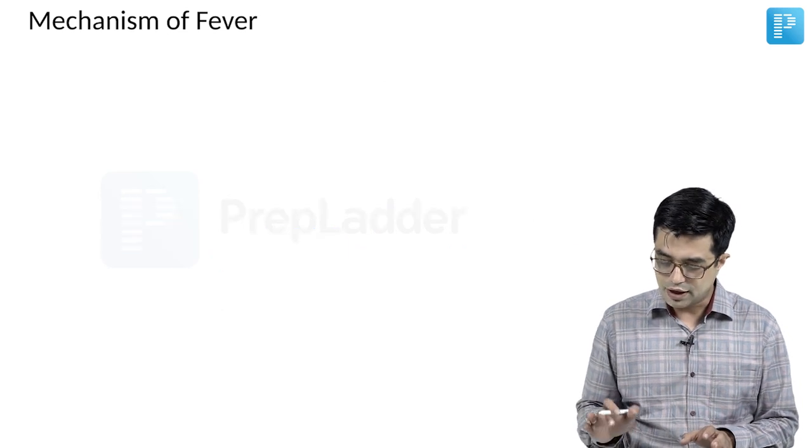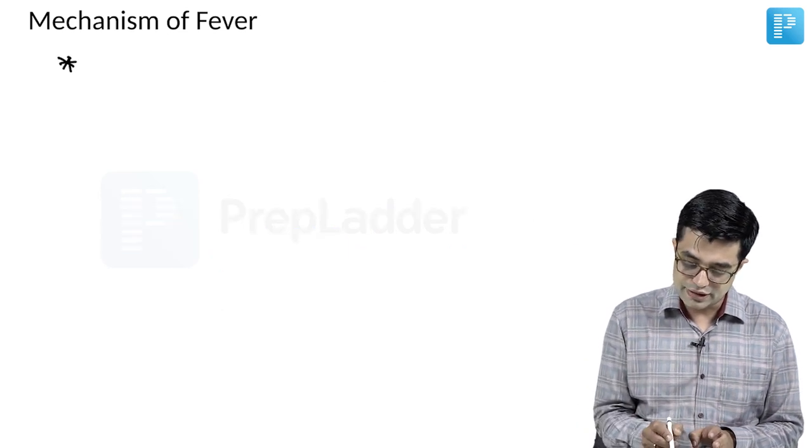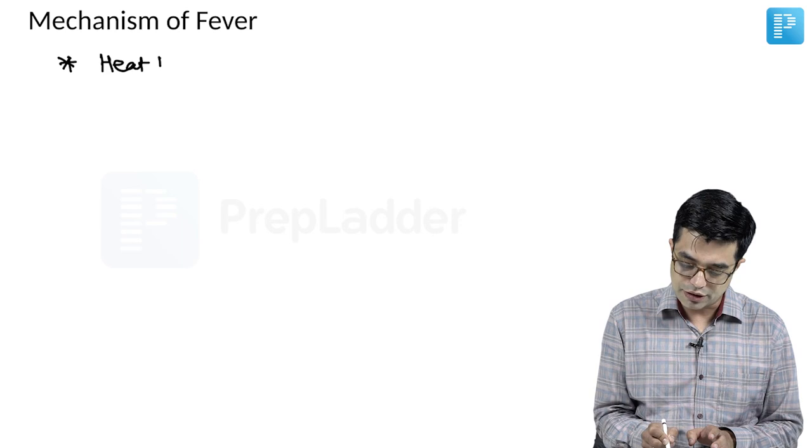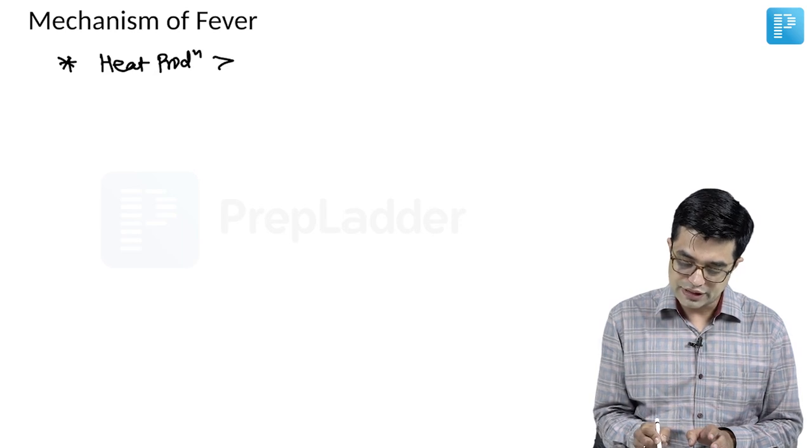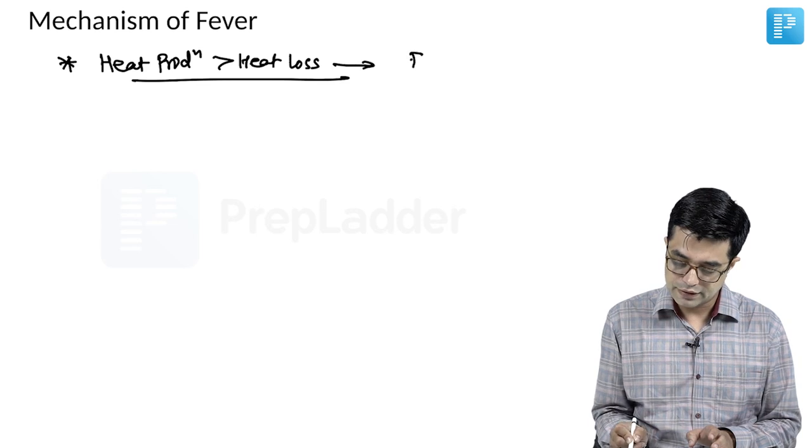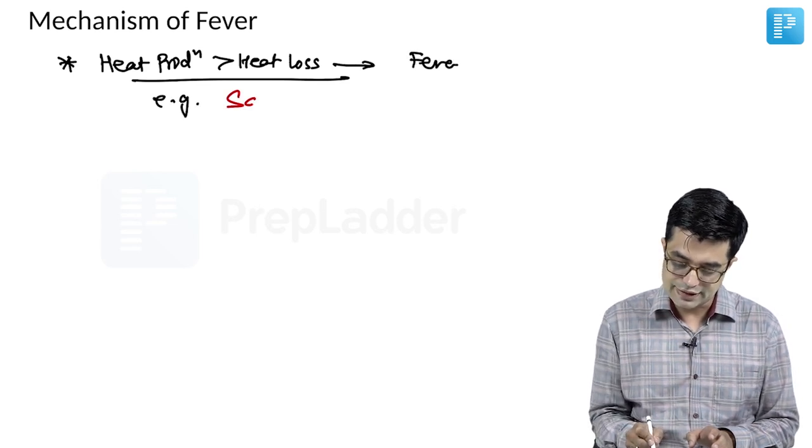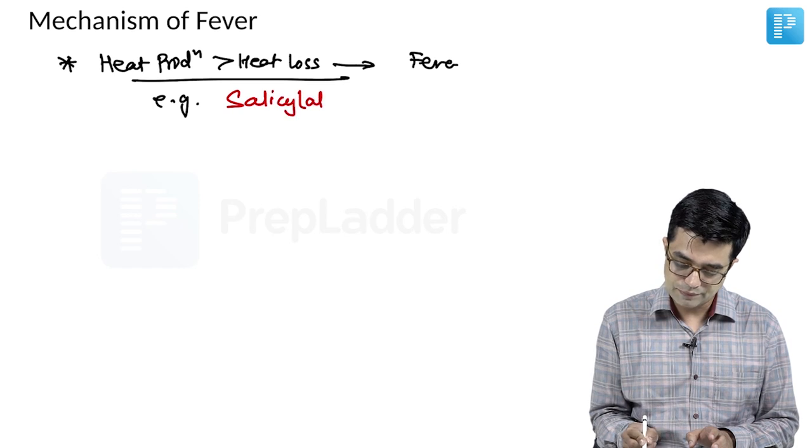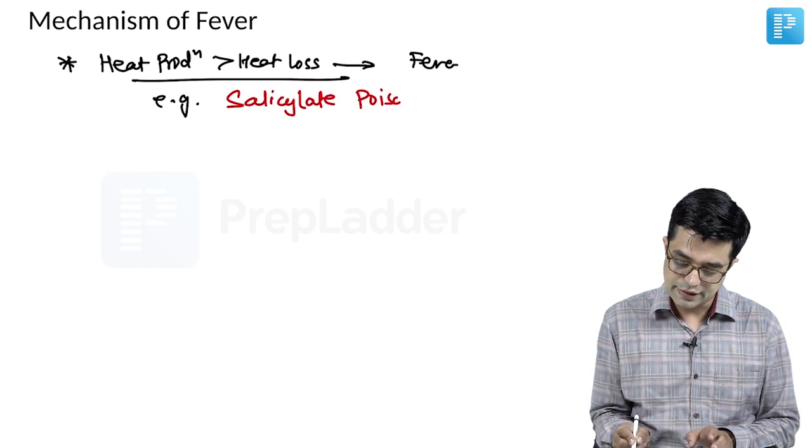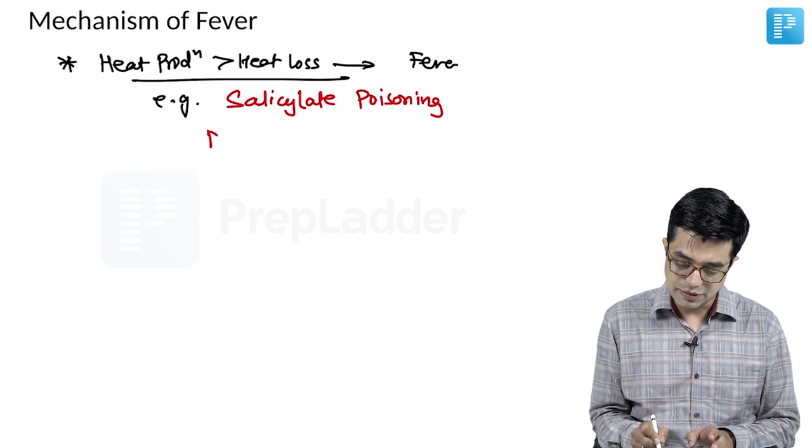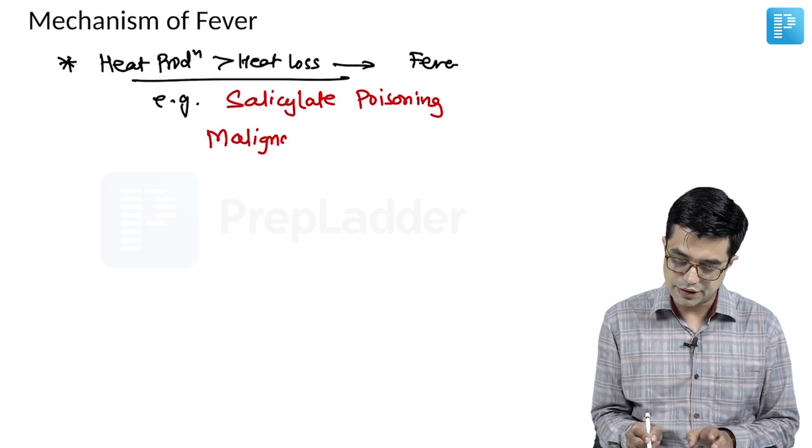Now, coming to mechanism, how, what are the areas, what are the conditions in which heat production is more than heat loss, which leads to fever. The typical example of this is, first of all, salicylate poisoning. Secondly, it can happen in malignant hyperthermia.